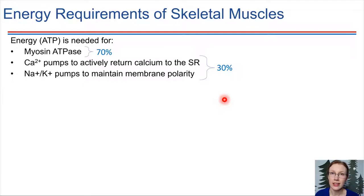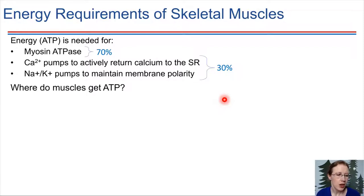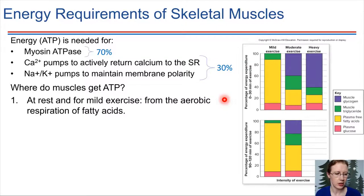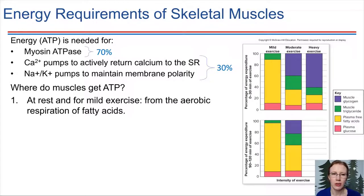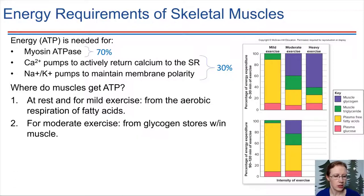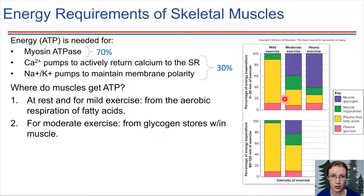Where do muscles get ATP? This is going to tie in with digestion — we're consuming food, and from the food ultimately is where we get our energy. Looking at the energy stores throughout the body: if a person is at rest or exercising very lightly, muscles make very efficient use of fatty acids. This is the typical energy source shown on the graph here in yellow — these are the fatty acids that are in the blood. Skeletal muscles primarily use this energy source when they are at rest.